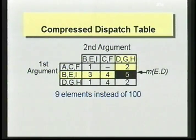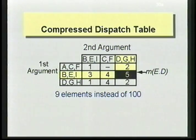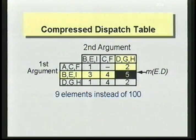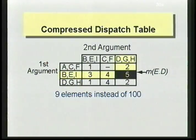Here you see the compressed version of the dispatch table. We have grouped types A, C and F; B and I; D; G and H in the first dimension, and in the second dimension columns B, E and I, etc. So you can read it like this: if the first argument is of type B, E, or I, and the second argument is of type D, G, or H, then the corresponding method is M5. We end up with a compressed dispatch table containing only nine elements instead of the hundred in the original table.